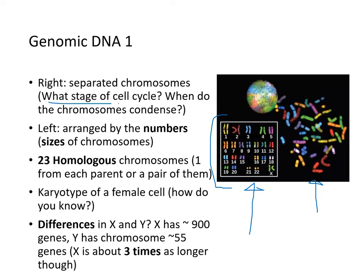Chromosomes start condensing at prophase. On the left is the arrangement by number and size of chromosomes. There are 23 homologous chromosome pairs, one from each parent. This is a female karyotype because it shows two X chromosomes instead of X and Y.